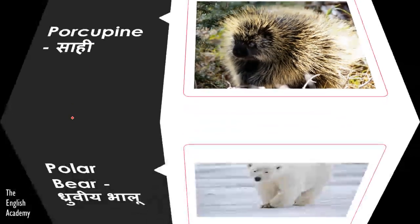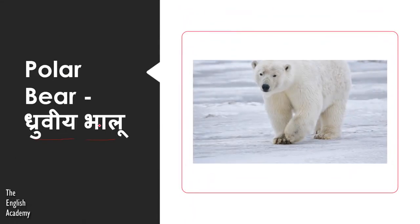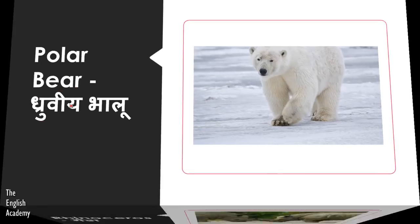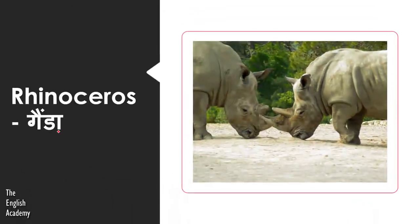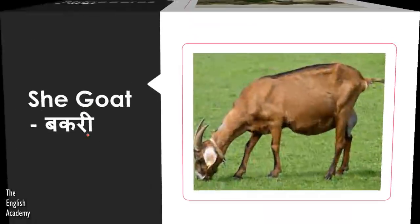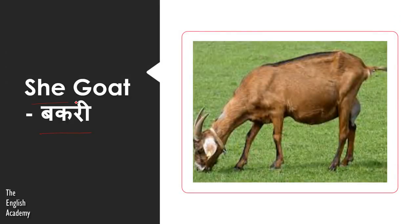The next animal is Dhruviya Bhalu, known as Polar Bear. The next animal is Genda, known as Rhinoceros. Next we have Bakri, known as She-goat.